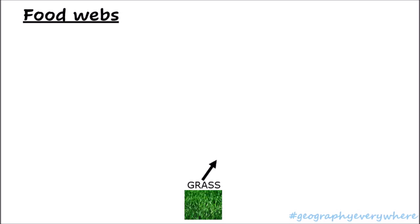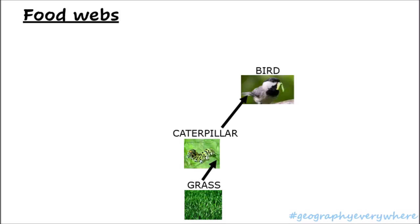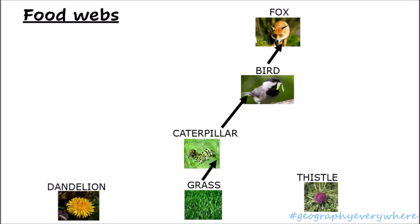Let's think about the food chain we just spoke about — the grass, eaten by the caterpillar, then the bird, then the fox. Now, let's imagine that apart from grass in our habitat, we also have dandelions and thistles.